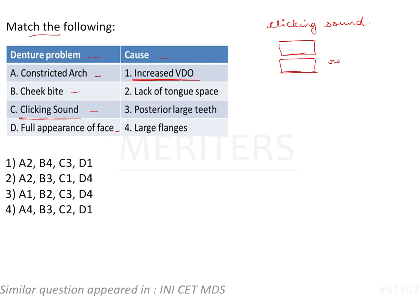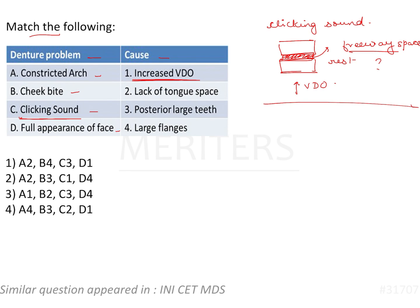Imagine that teeth are nearly very close to each other at rest, and there is a freeway space which is always maintained. If this freeway space is not maintained, the teeth will touch each other. This happens because of increased vertical dimension at occlusion, so the answer for clicking sound should be C-1.